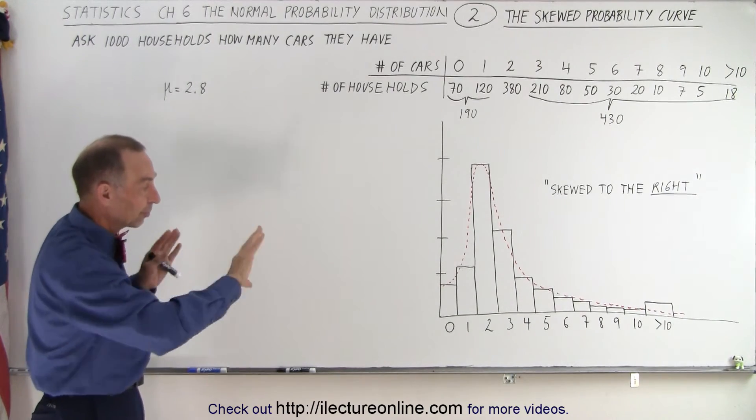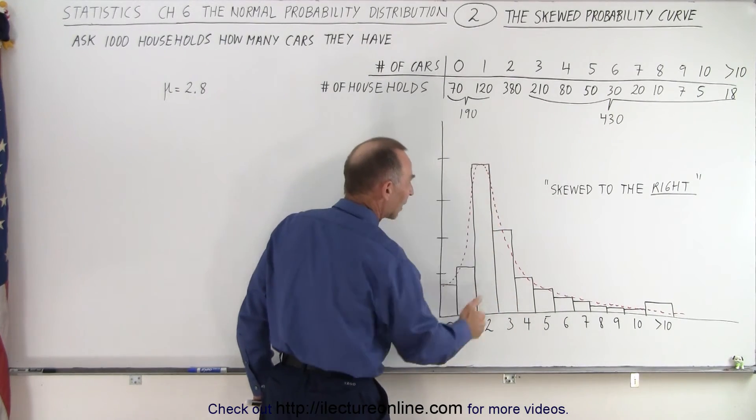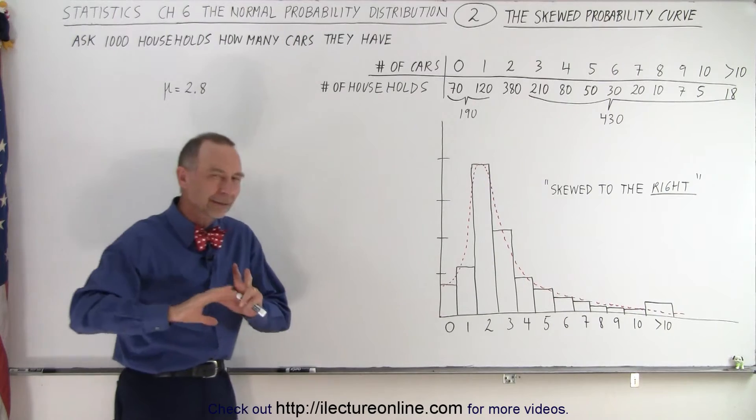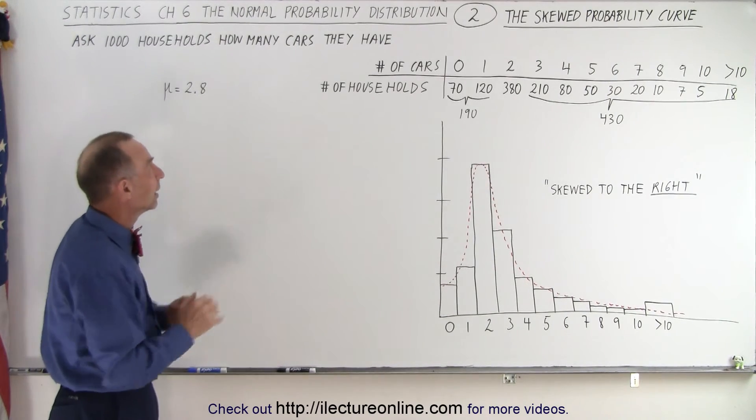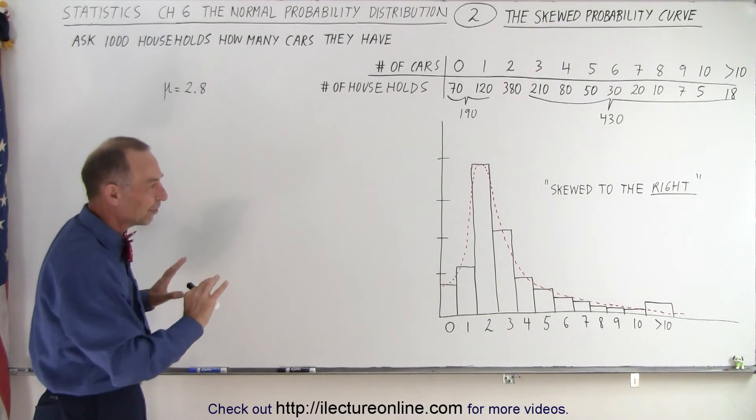But here you can see there's some separation—the mean is to the right of the highest probability. Again, that takes it away from being a normal probability distribution. So at least you can see the difference.